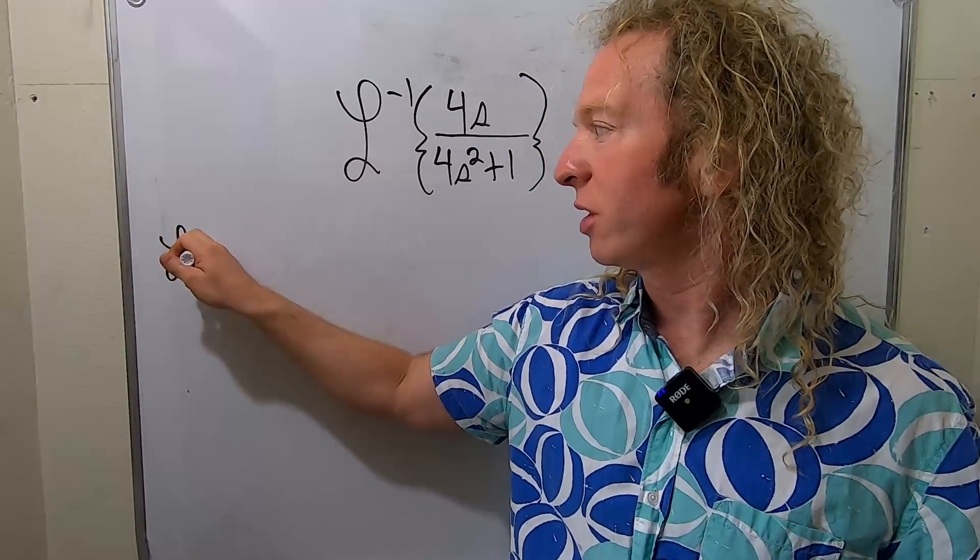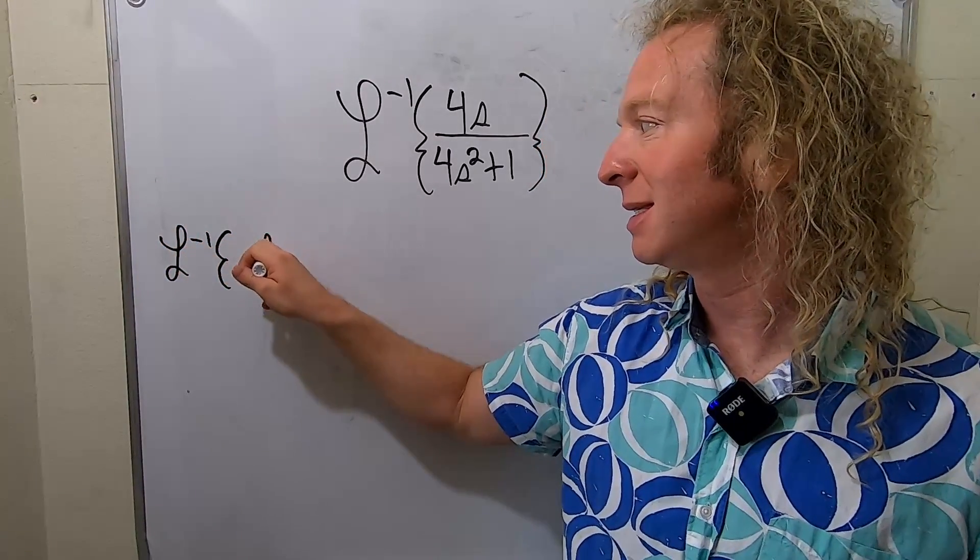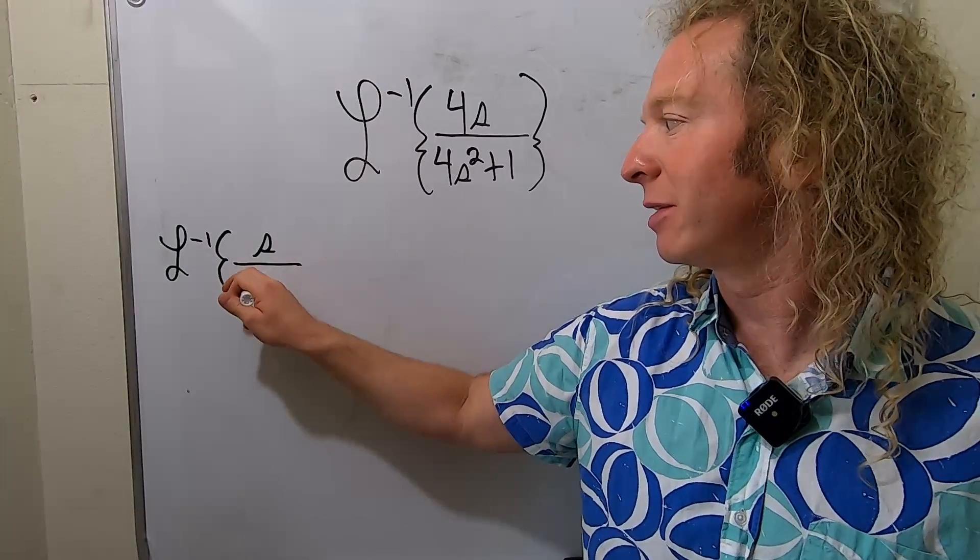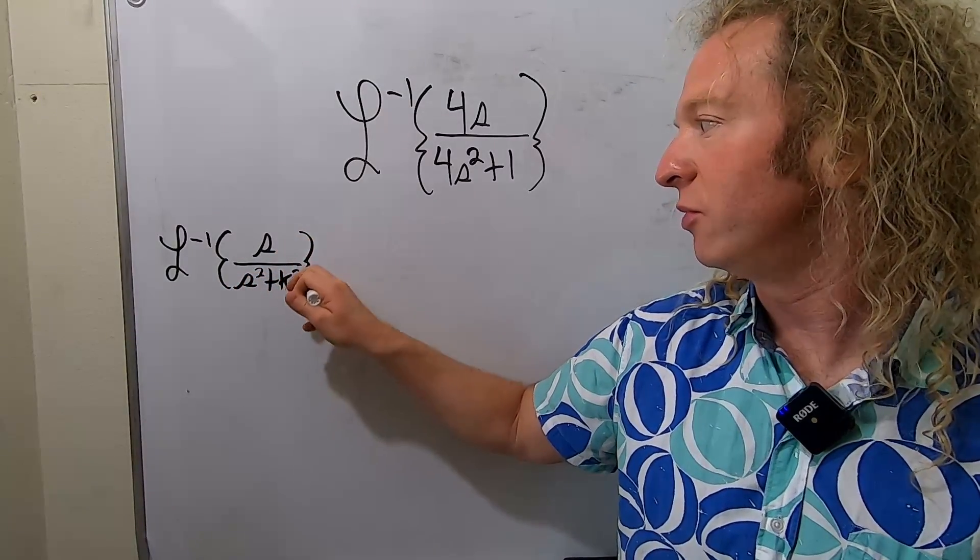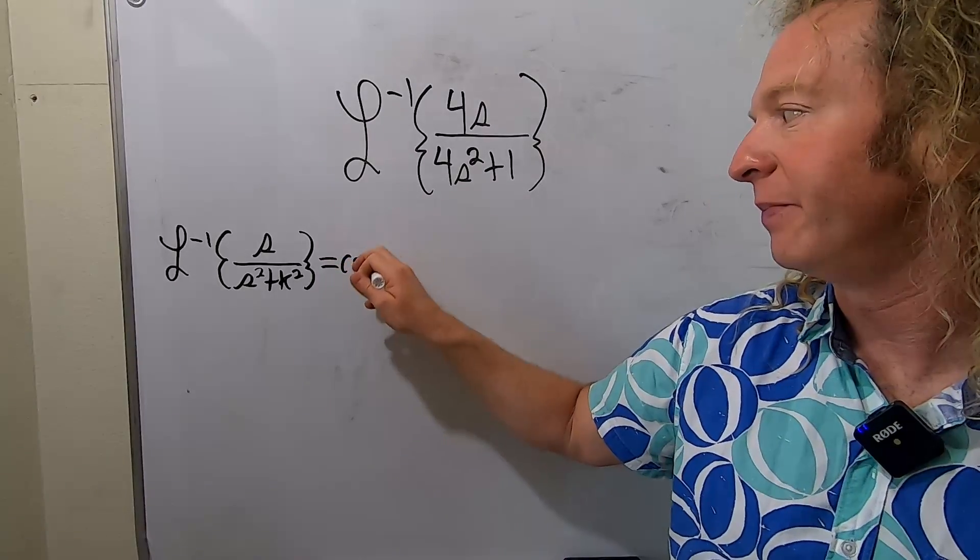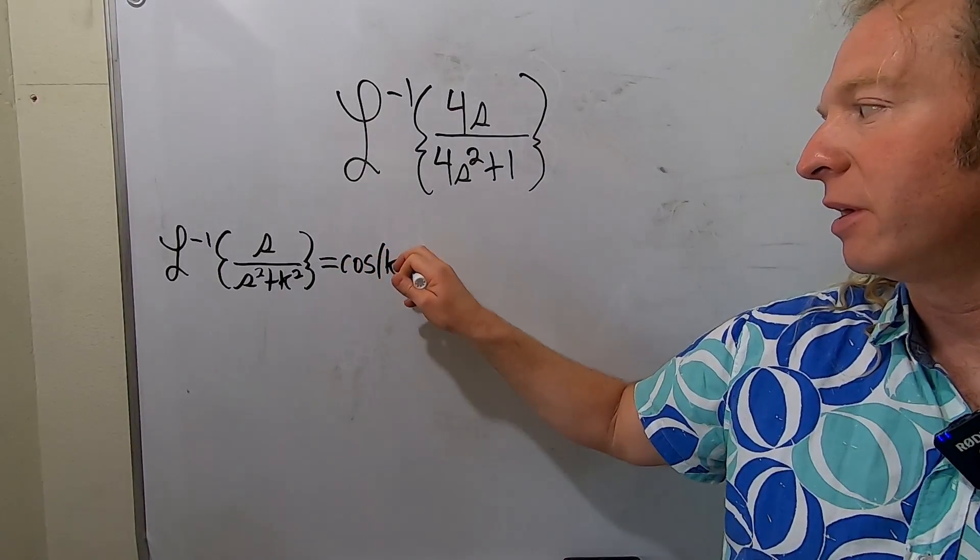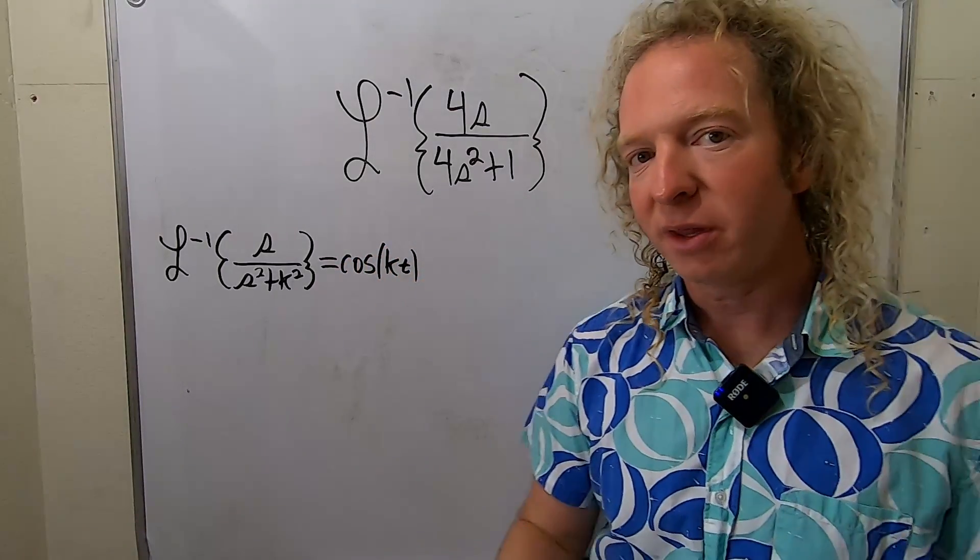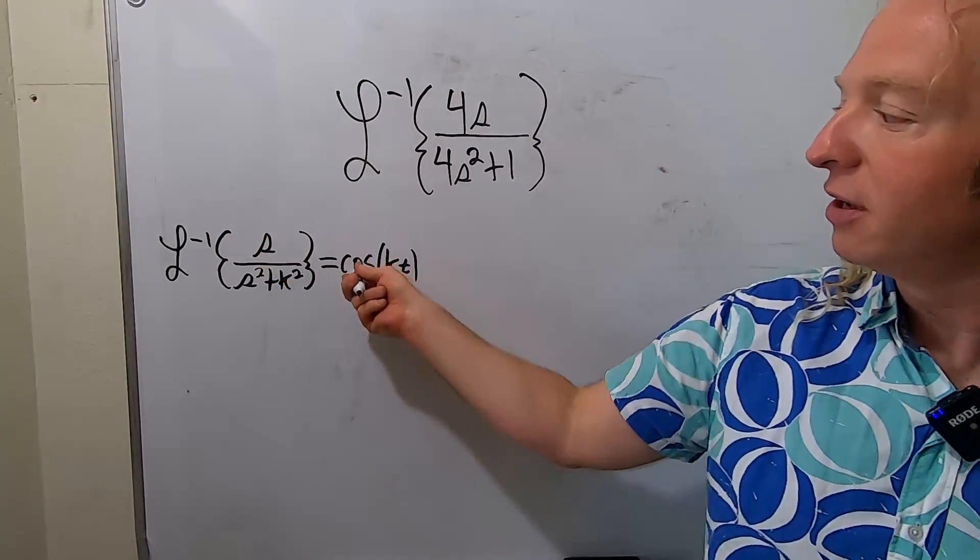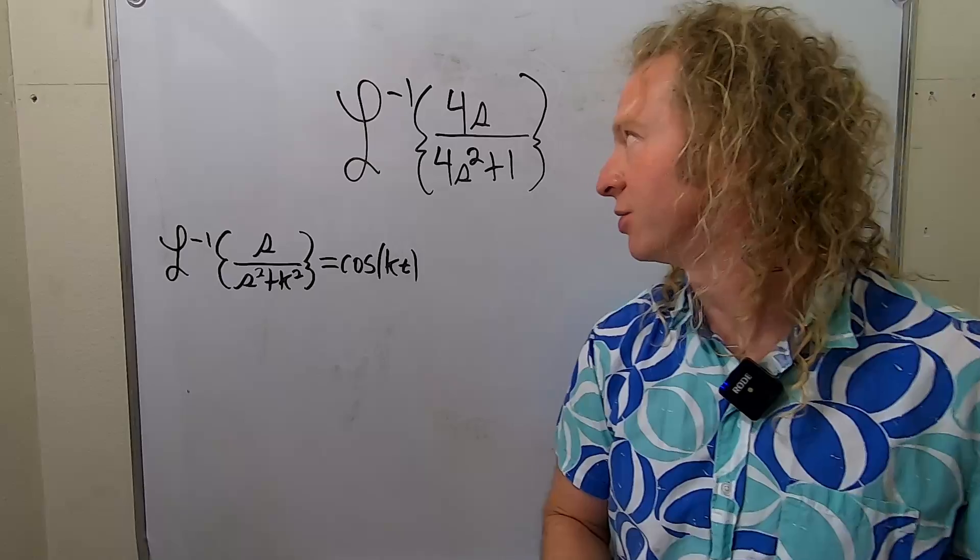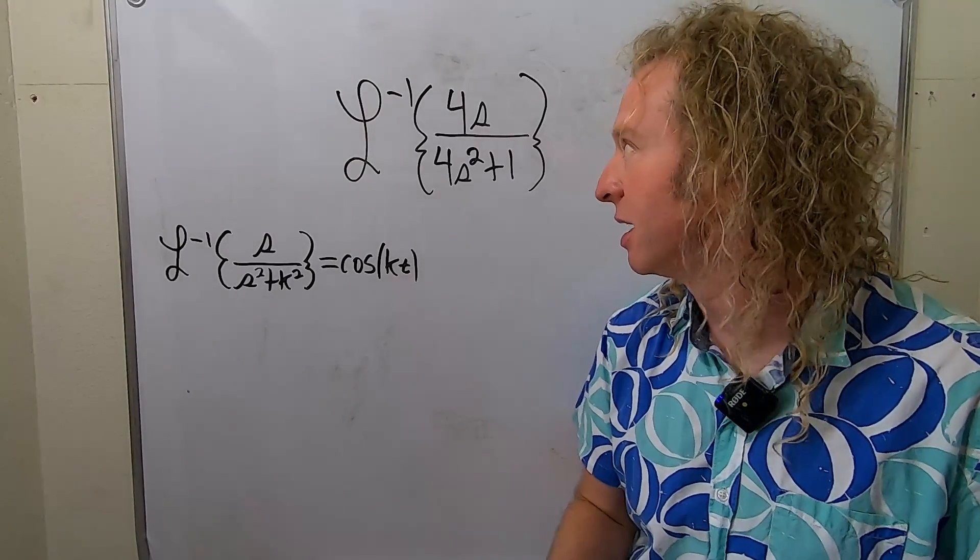Recall that the inverse Laplace transform of s over s squared plus k squared is equal to the cosine of kt. The way I memorize this formula is I always just remember that cosine has the s and then sine has the k. If there's a k here, this becomes the sine function. So just remember cosine has the s.